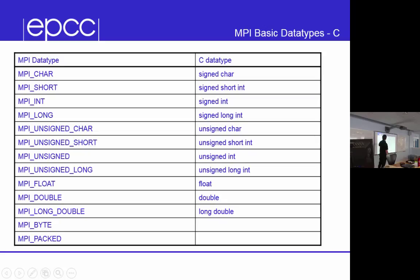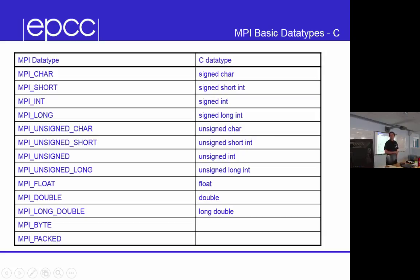For scientific and technical programming, you want to know about MPI_INT, MPI_FLOAT, and MPI_DOUBLE — they're the important ones. For each C type, there is a predefined MPI type.